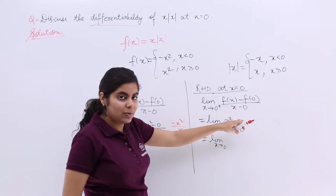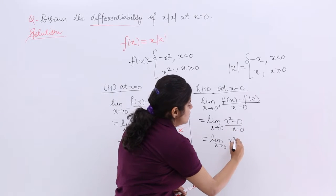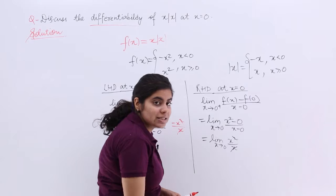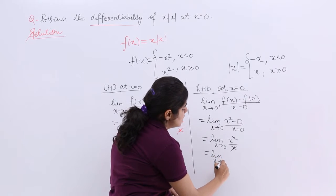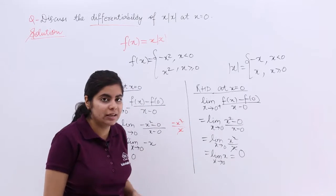x square minus 0 is x square upon x minus 0 is upon x. So it is x square upon x. Things cancel. So it is basically nothing but limit x tends to 0x which is 0 only because 0 is tending there.